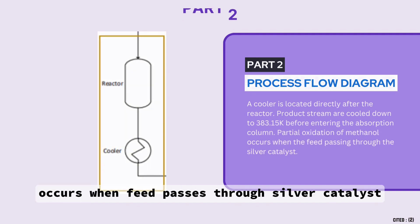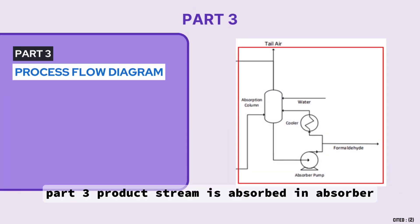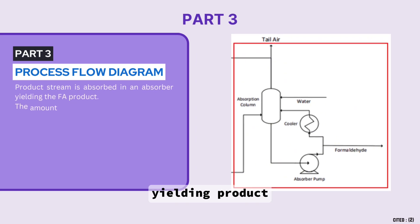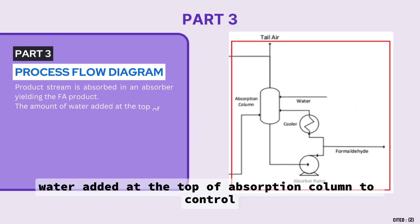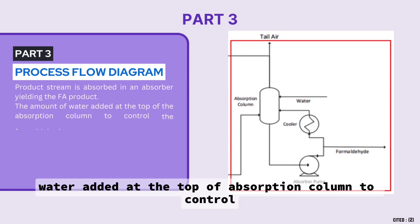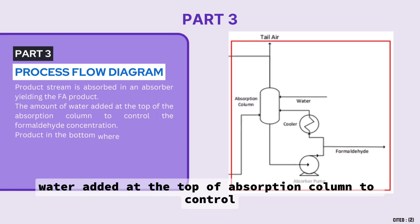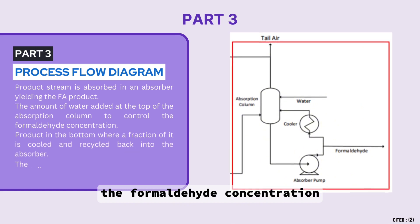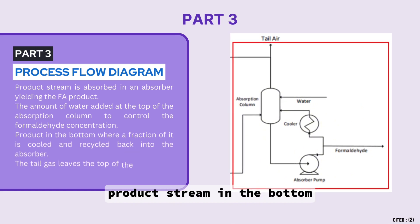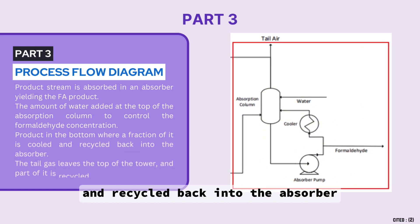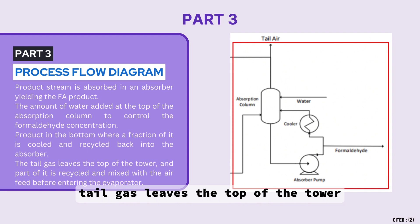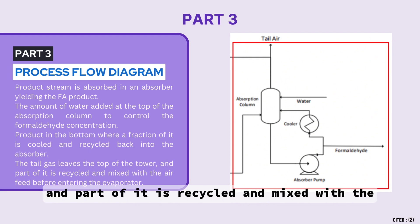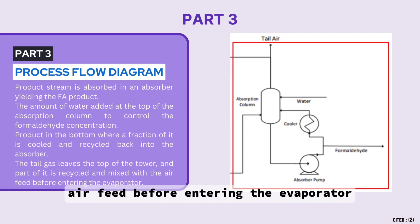In part three, the product stream is absorbed in the absorber, yielding the product. Water is added at the top of the absorption column to control the formaldehyde concentration. The product stream exits from the bottom and is recycled back into the absorber. Tail gas leaves the top of the tower, and part of it is recycled and mixed with the air feed before entering the evaporator.